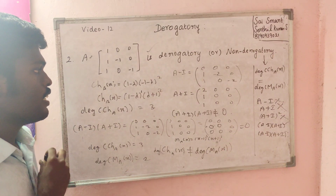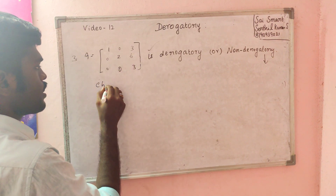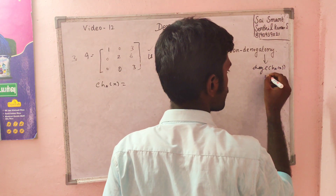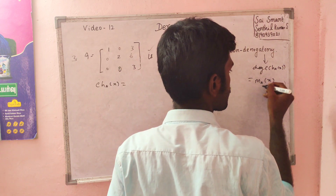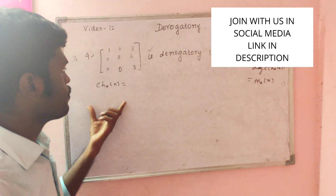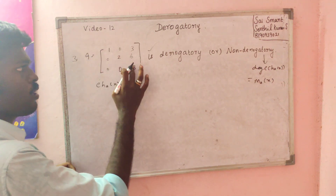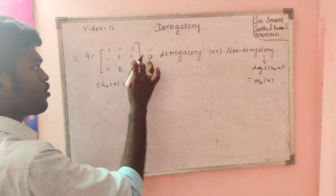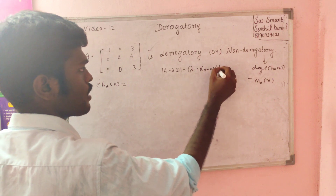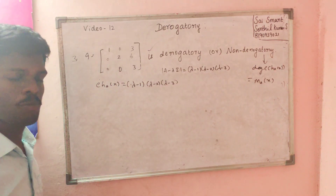Looking at the next problem: it is very simple. This is an upper triangular matrix. The determinant of A minus lambda I gives (lambda minus 1)(lambda minus 2)(lambda minus 3). This is the characteristic polynomial with distinct eigenvalues lambda equals 1, 2, and 3.